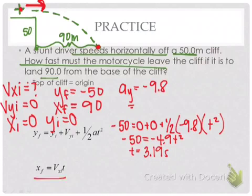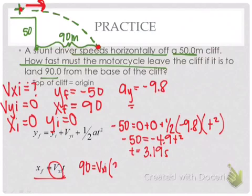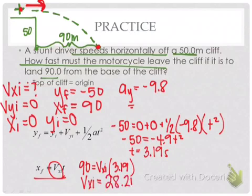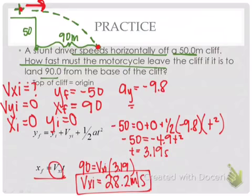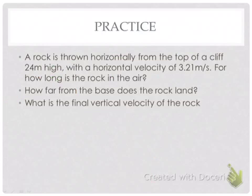Now let's solve for V sub XI — our initial velocity, the speed at which they left the cliff. X final equals 90, we're solving for V sub XI, and time is 3.19 seconds. Using X final equals V sub XI times time, we can solve for V sub XI.